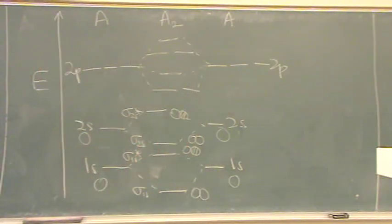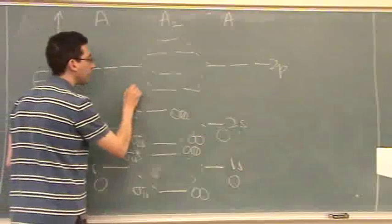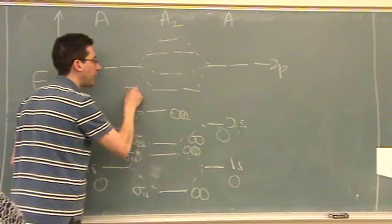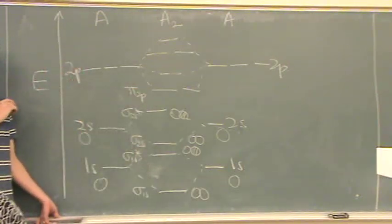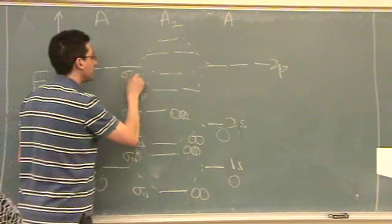Like that. I can name them just like I've been doing before. Whenever there's 2, it's a pi bond. Pi 2p because they're 2p orbitals.